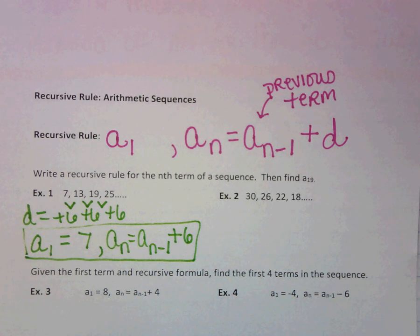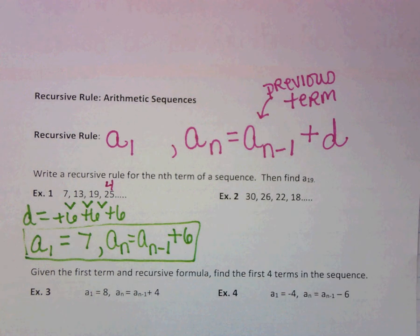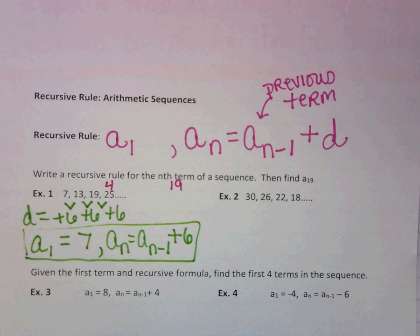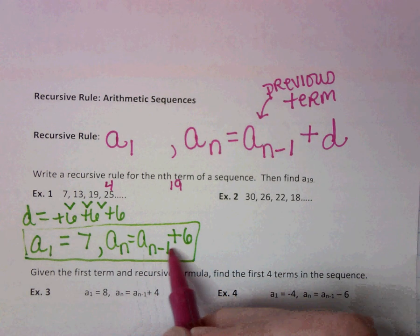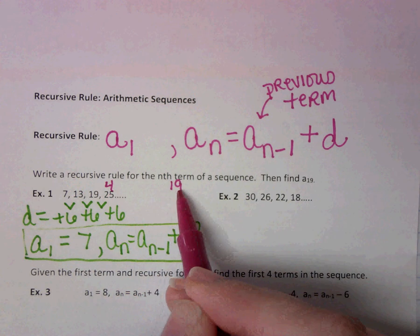So then I want to find a sub 19. We know that we're at 1, 2, 3, the fourth term, and we have to go all the way to 19. We should be able to see that the pattern is adding 6. So how many terms is that between 4 and 19? That's 15, right?